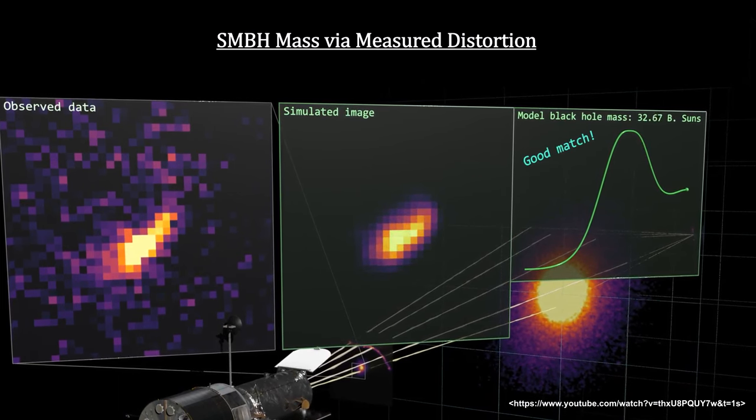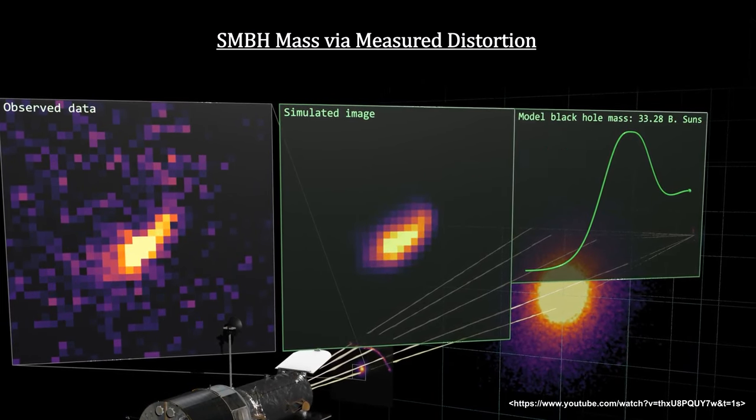The best fit came when a mass of 33 billion suns was input. This mass makes it one of the most massive black holes ever detected.